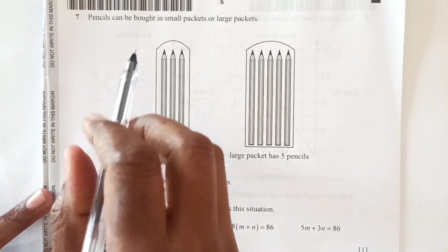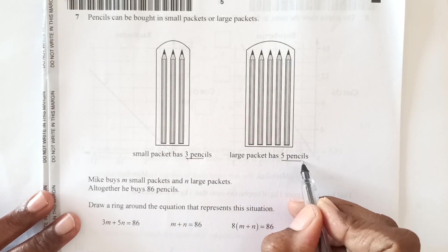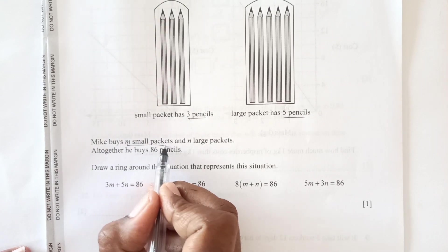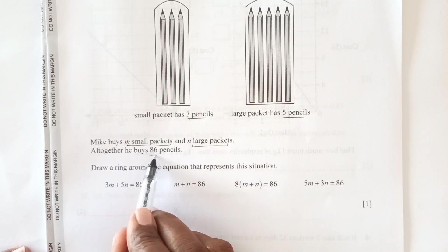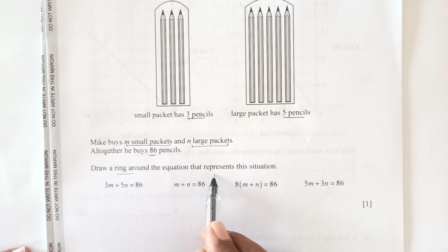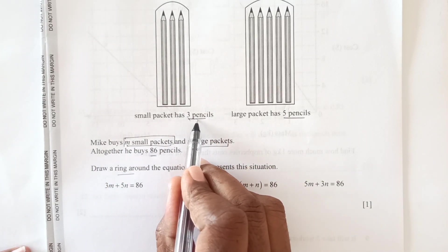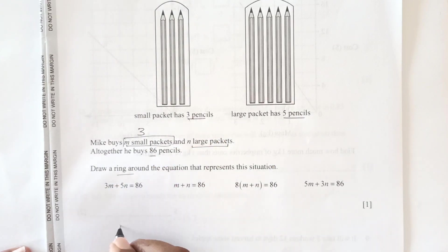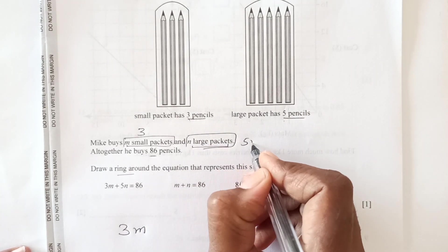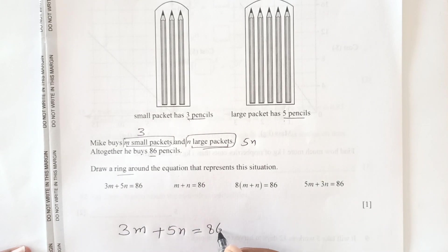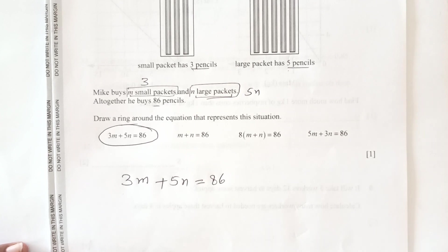Question number 7. Pencils can be bought in small packets or large packets. We have 2 packets here. Small packet has 3 pencils. Large packet has 5 pencils. Mike buys m small packets and n large packets. Altogether he buys 86 pencils. Draw a ring around the equation that represents this situation. So we have a small pack, he buys m small pack. So one small pack contains 3 pencils, so m will be 3m. And then the large is n. So n large is going to be 5n. So plus 5n. Altogether if you add them together it is 86. So 3m plus 5n is 86. So here is the equation that we will circle.